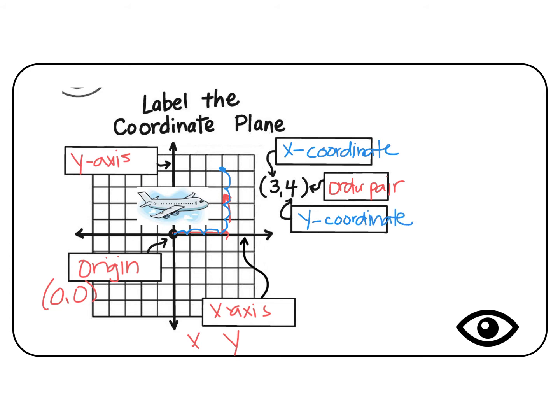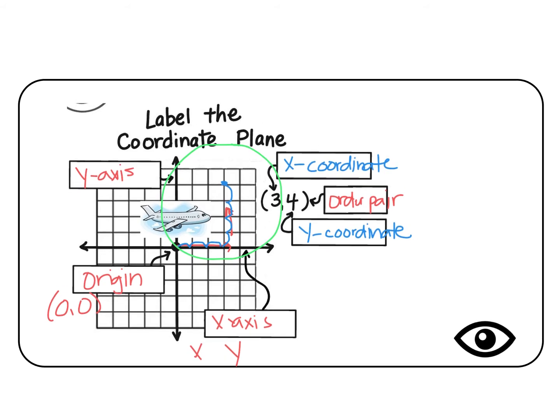Now, in 5th grade, we're mostly going to be talking about this top corner that we call quadrant 1. It is important to know that there are four quadrants, but here in 5th grade, we're mostly going to talk about quadrant 1.